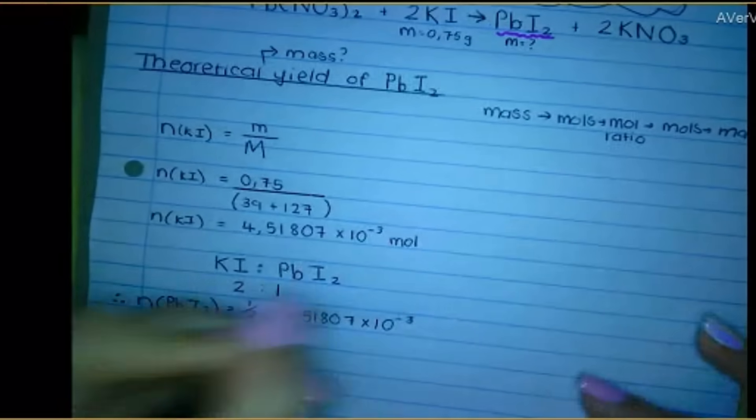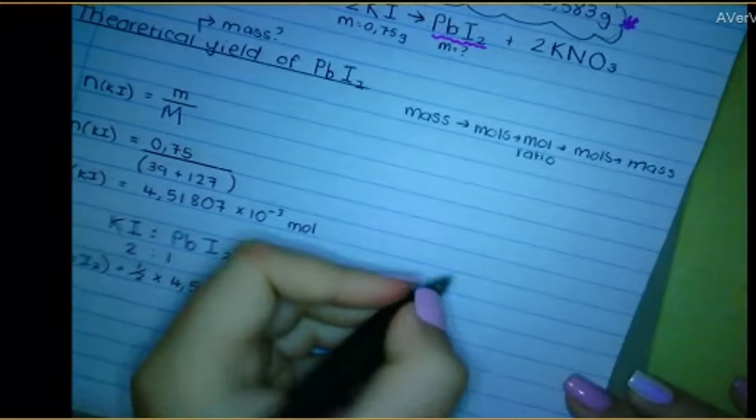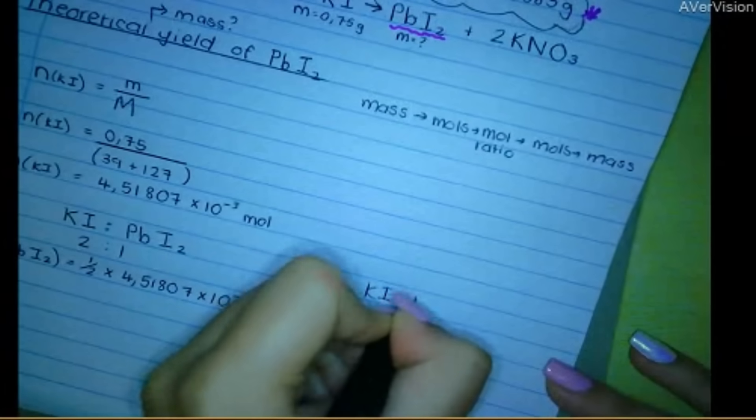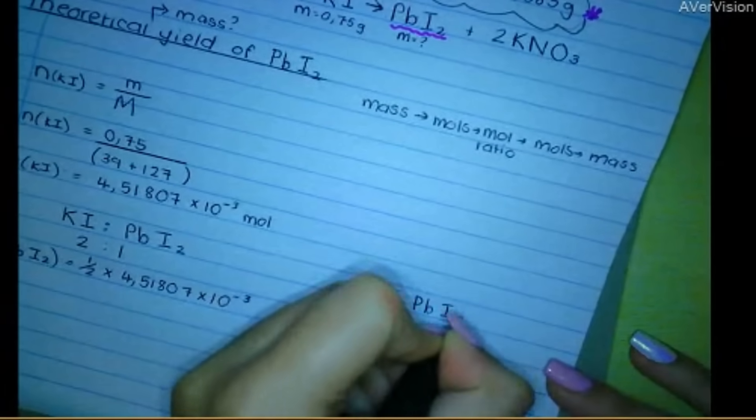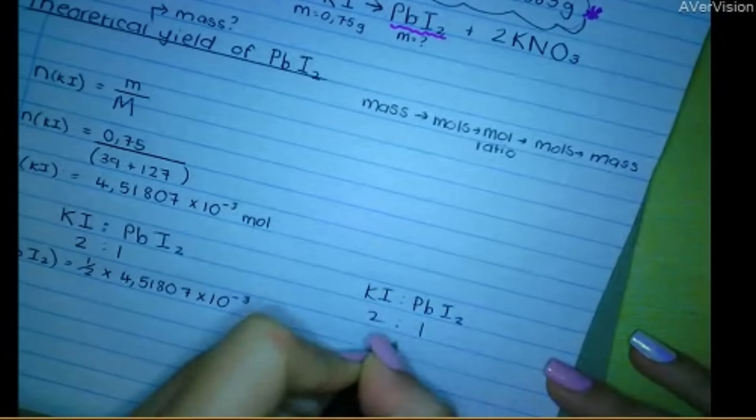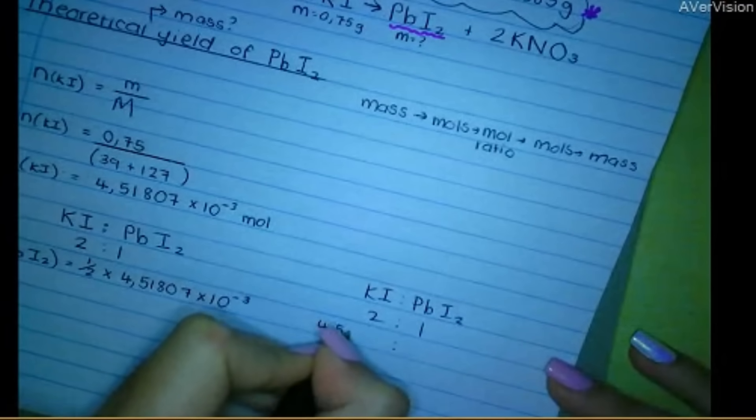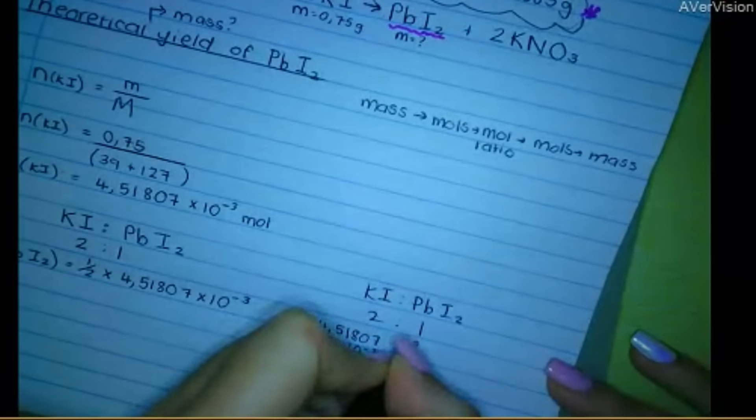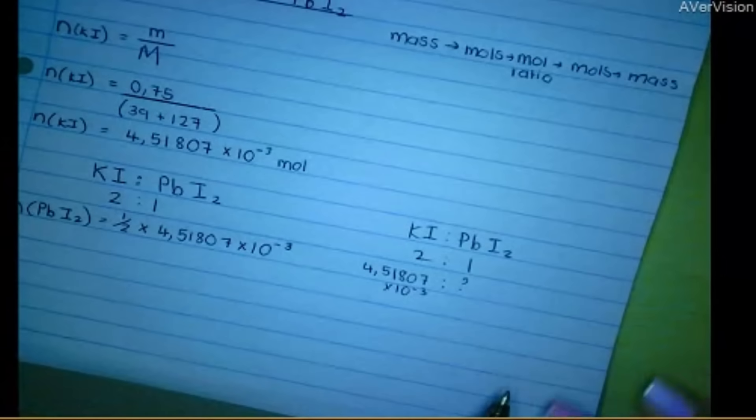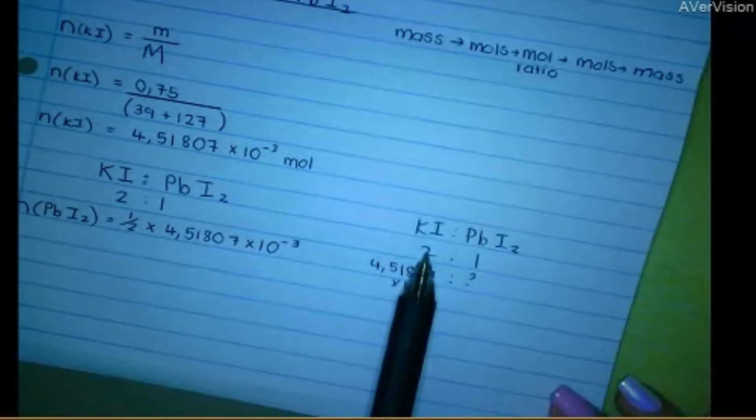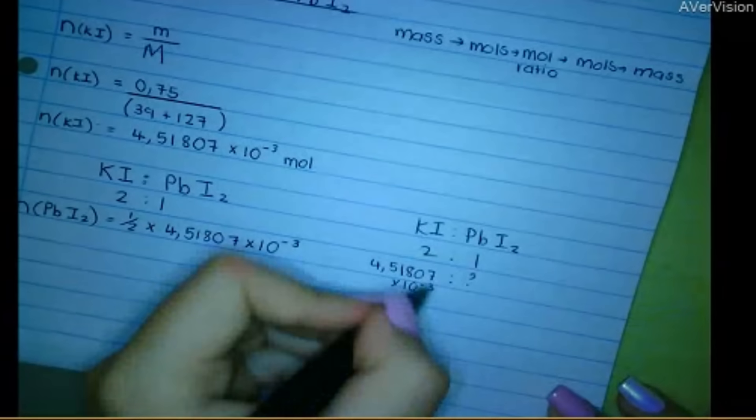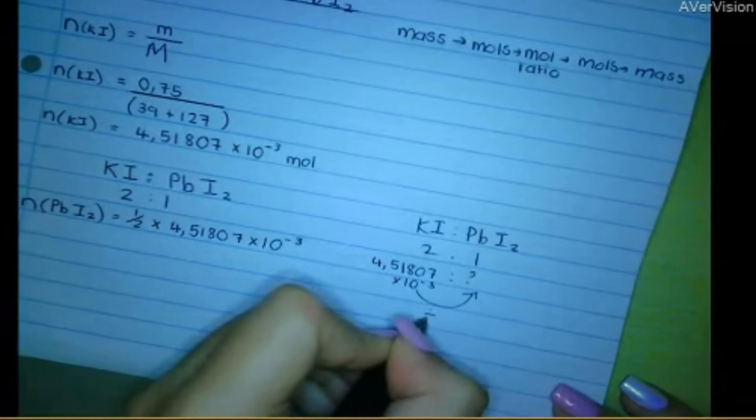I hope that's making sense to you guys. There's lots of different ways to work with ratios. If you want, you could go KI to PbI2 and you could go two to one. So if this one is 4.51807 times 10 to the negative three, then what is this one? And you can work out your ratio however you want. So what do I need to do to get from two to one? I must divide by two.